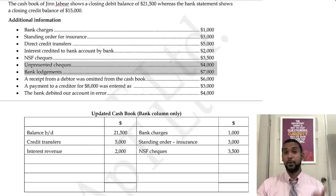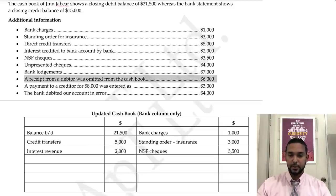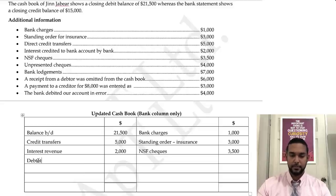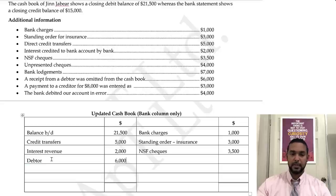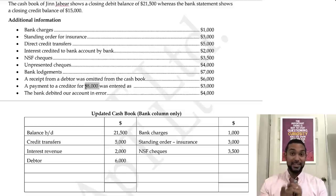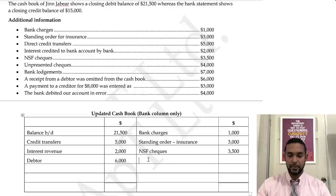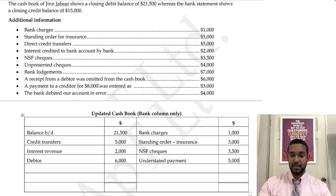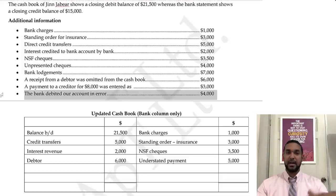Unpresented checks and bank lodgements go on the bank rec. A receipt from a debtor was omitted from the cash book — receipts go on the debit side, omitted means not put in, so we put debtor $6,000 on the debit side. A payment to a creditor was entered as $3,000 but should have been $8,000 — it's understated by $5,000. Since it's a payment on the credit side that's too low, we go on the credit side and put understated payment to creditor $5,000. The bank debited our account in error — that's a bank rec item.